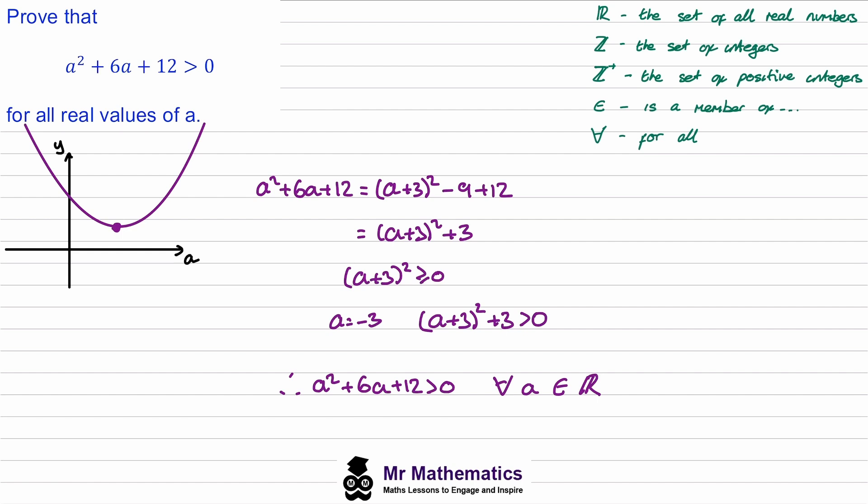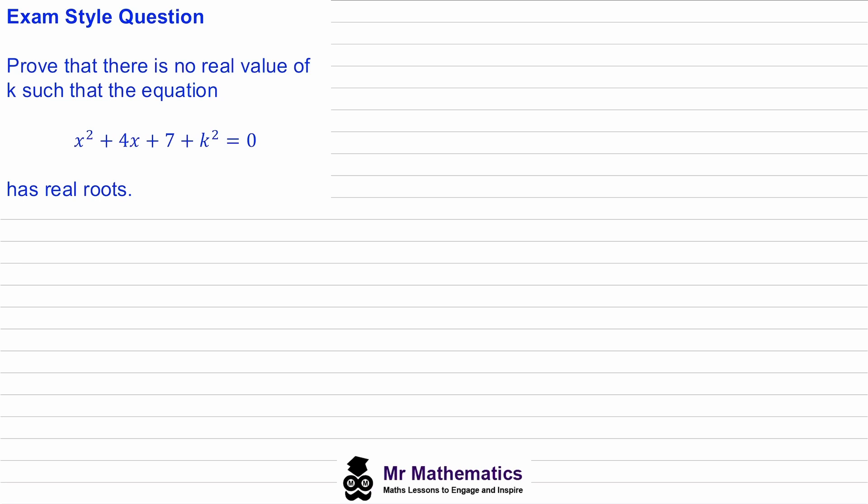Let's try an exam style question. In this exam style question we've been asked to prove that there is no real value of k such that this equation can have real roots. There's a couple of ways we could do this, but I'm going to look at using the method of completing the square.